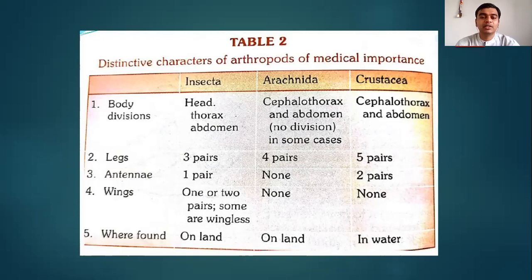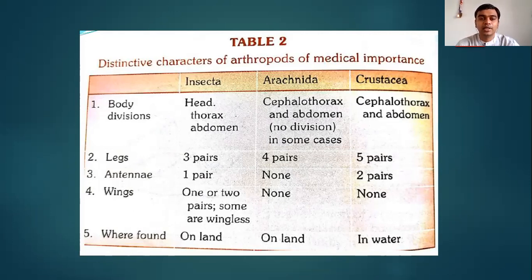Regarding legs: Insecta has three pairs, Arachnida has four pairs, and Crustacea has five pairs. For antennae: Insecta has one pair, Arachnida has no antennae, and Crustacea has two pairs. Insects may have one or two pairs of wings — that is two or four wings — and some insects in class Insecta are wingless. Arachnida and Crustacea do not have wings. Insecta and Arachnida are found on land, while Crustacea (Cyclops) is found in water.